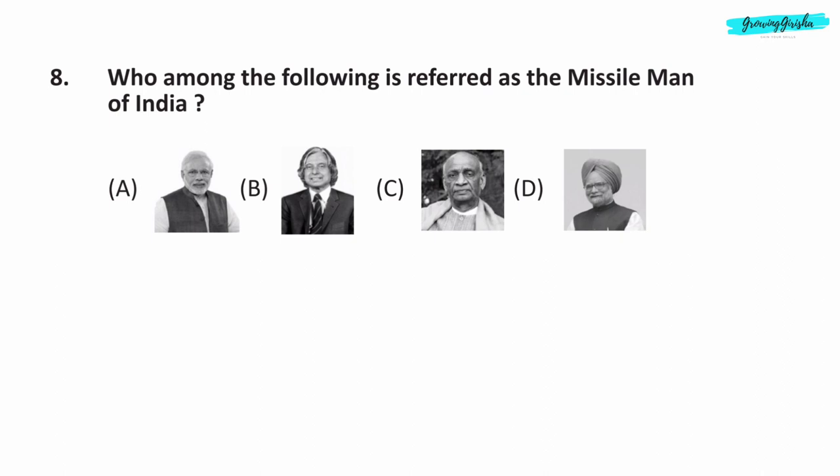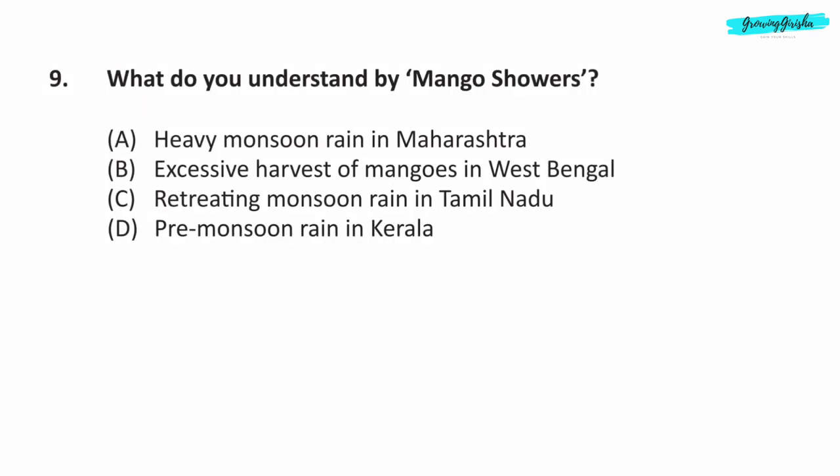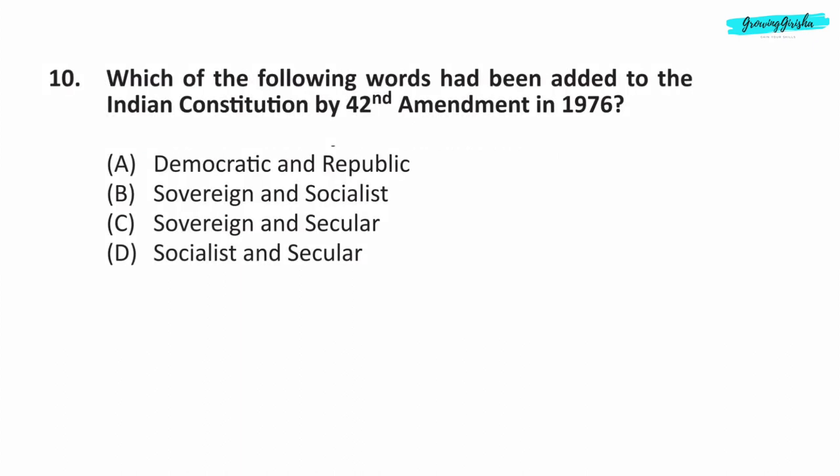Question 8. Who among the following is referred to as the Missile Man of India? Question 9. What do you understand by mango showers? Option D — it is pre-monsoon rain in Kerala.